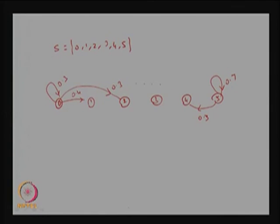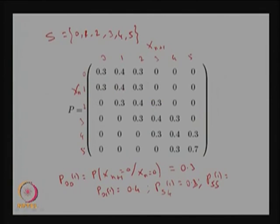The state transition diagram has nodes 0, 1, 2, 3, 4, and 5. From state 0: probability 0.3 to 0, 0.4 to 1, 0.3 to 2. From state 5: probability 0.3 to 4 and 0.7 to 5. All arcs are drawn with their positive probability weights; arcs with probability 0 are not drawn.